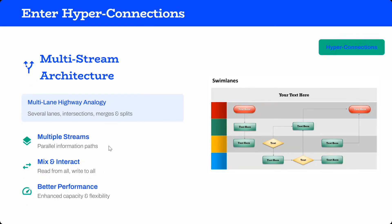To challenge that, enters hyper connection - multi-stream architectures, multi-lane highway analogy. Multiple streams with parallel information passing. As mentioned, multiple copies of the previous output are maintained and different variants are generated - multiplication, subtraction, different constants are getting used. Then they're getting added to the next layer, mixture and interaction happens, and better performance.